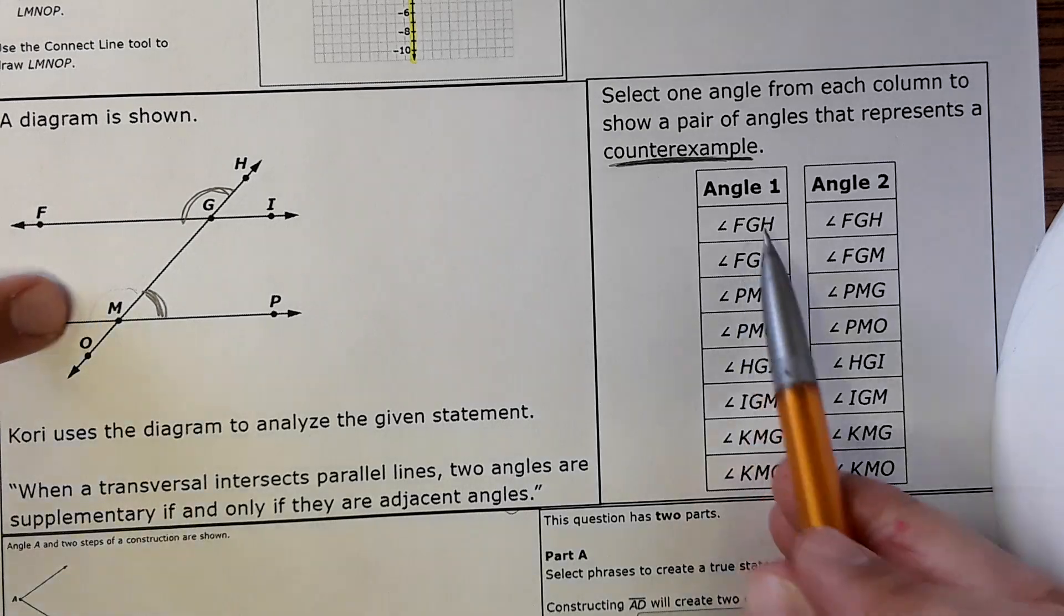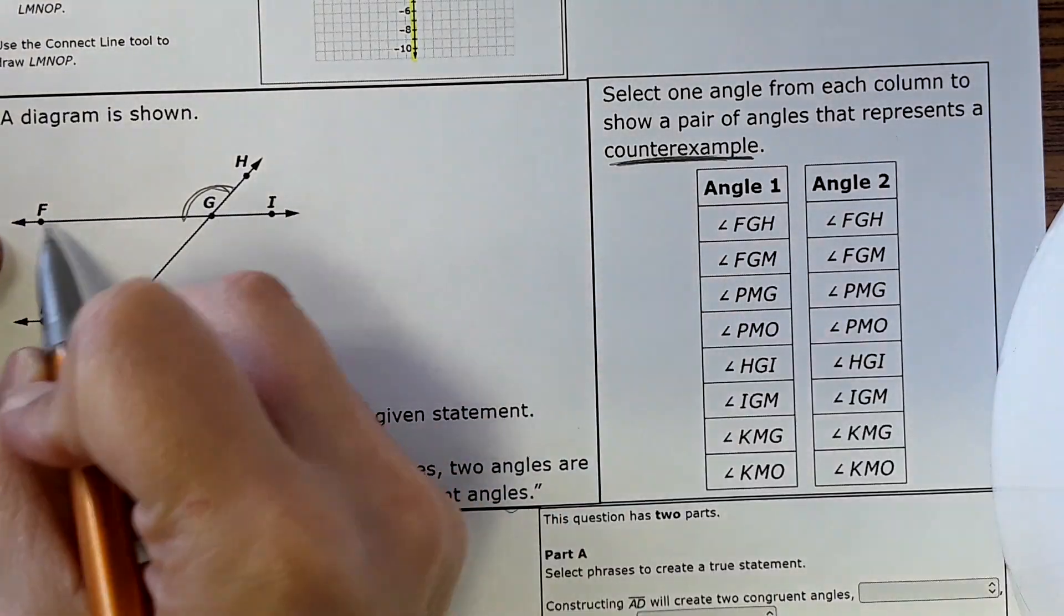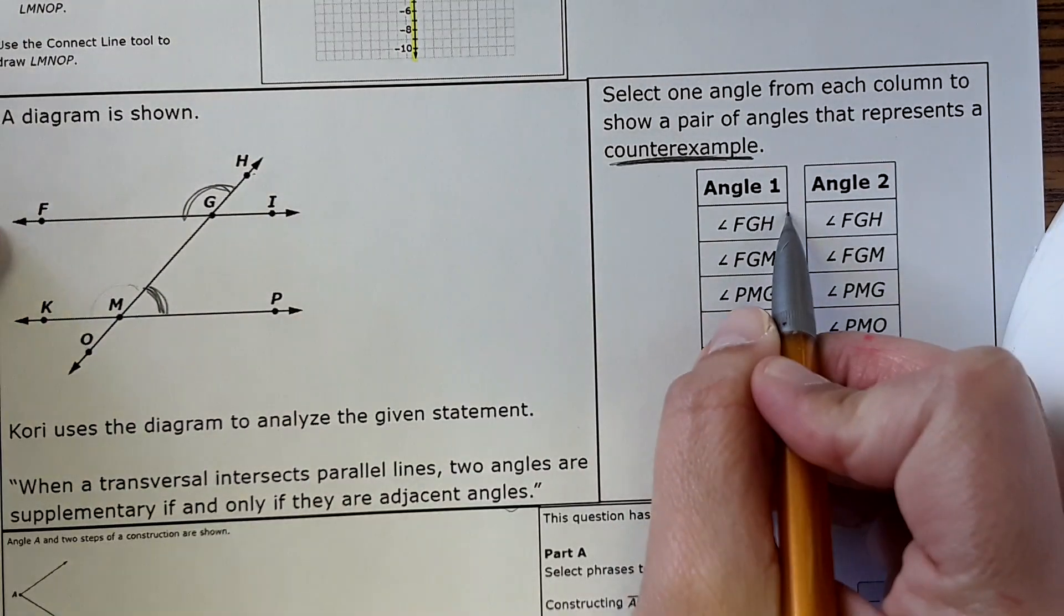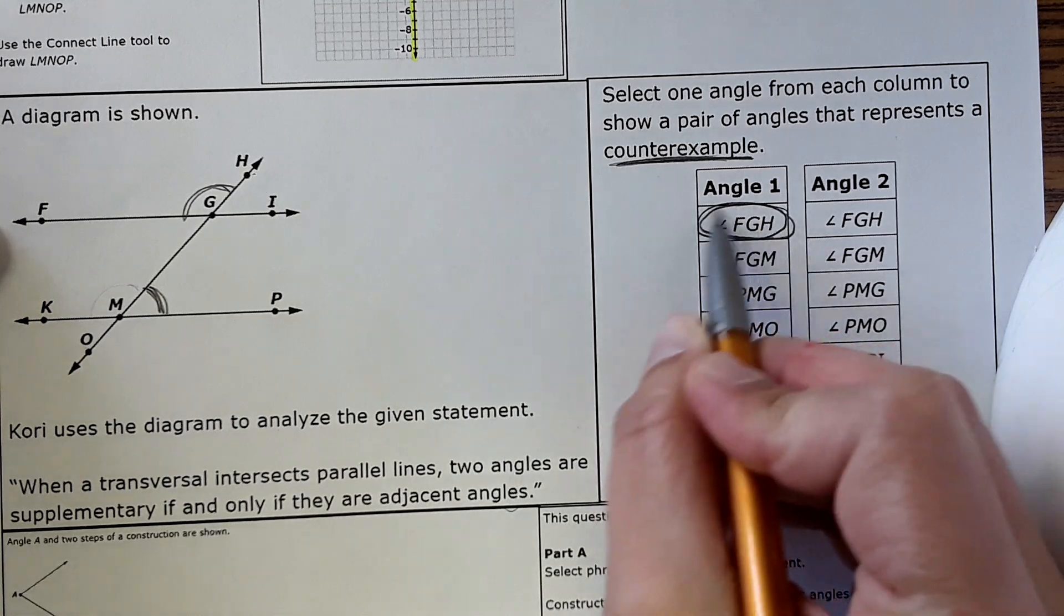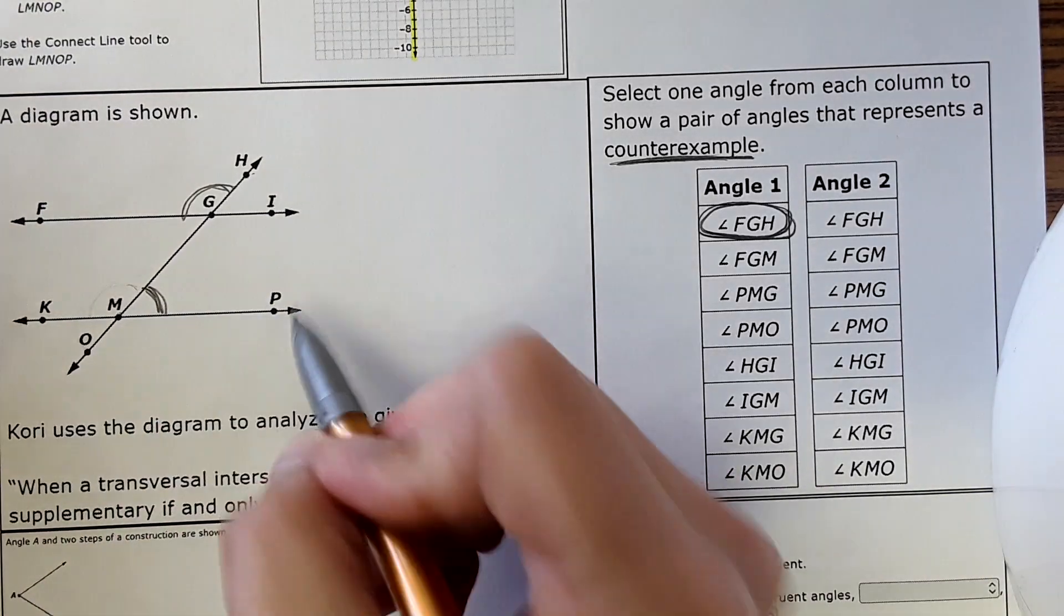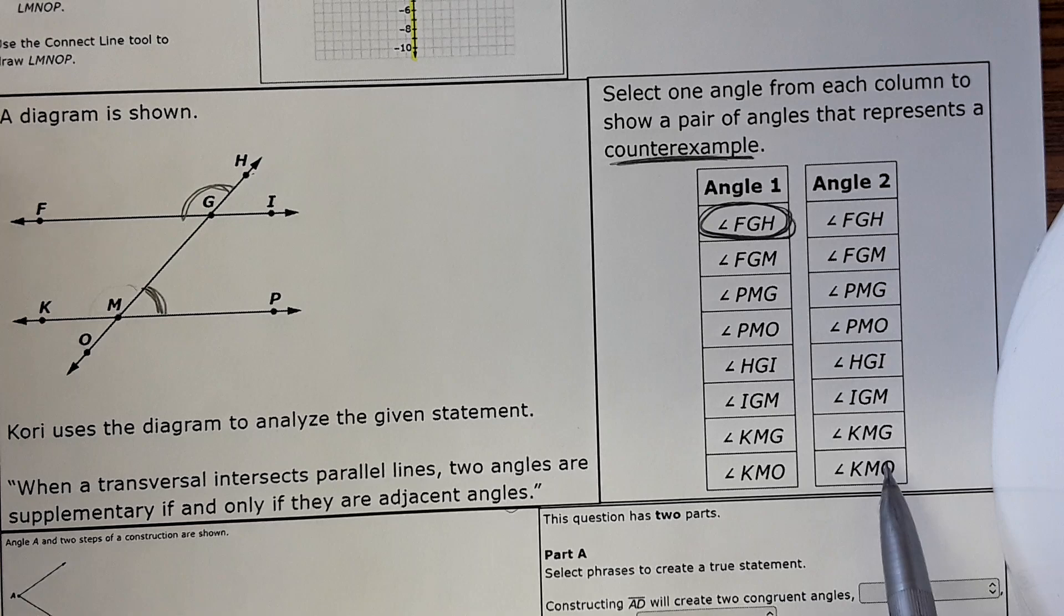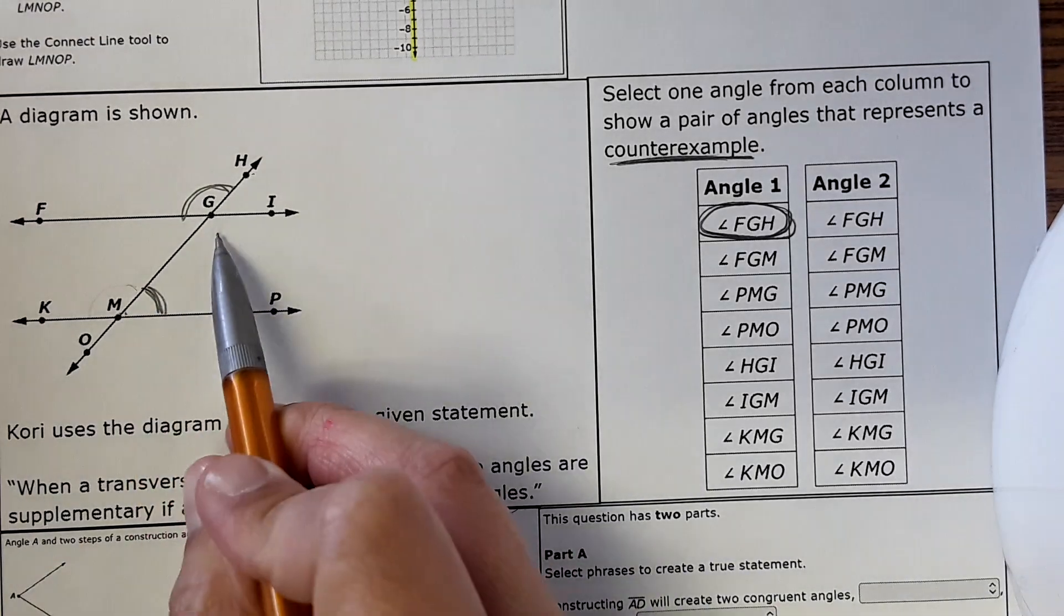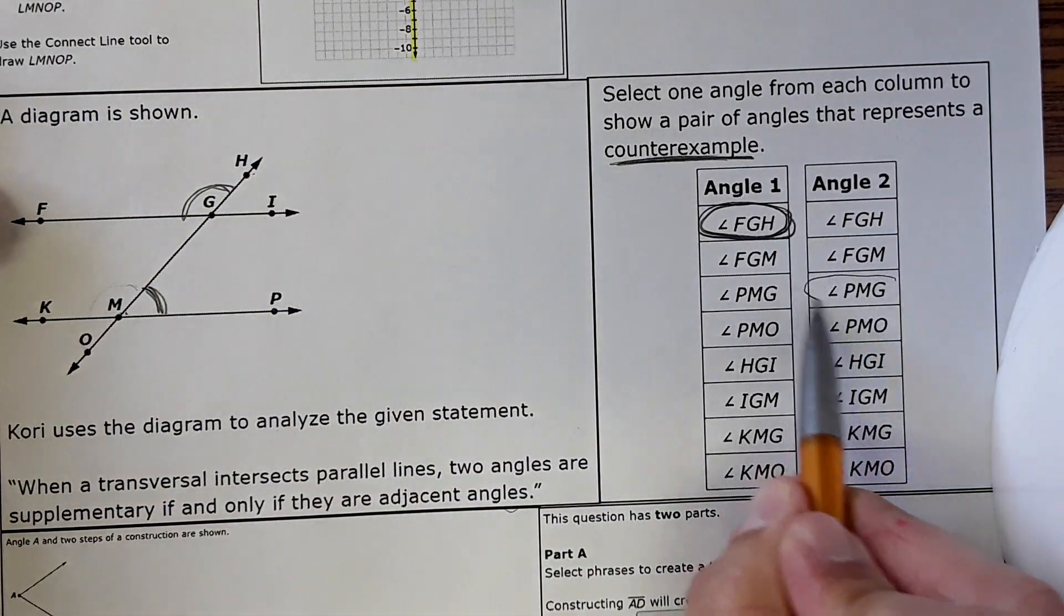There are several different correct answers. This would just be one correct answer. This is FGH, so on the computer you'd click this one and it would highlight purple. Then this one GMP - GMP is not over here but PMG yes, so you could click these two.